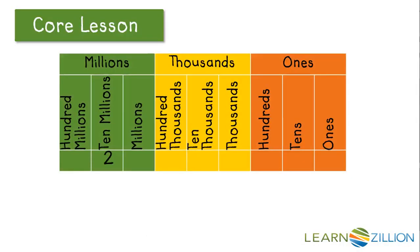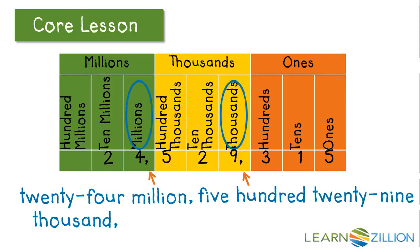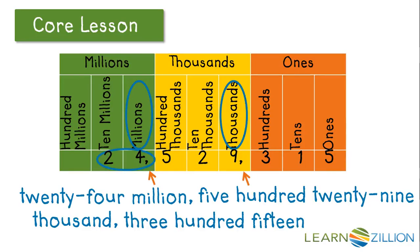Let's look at another number: 24,529,315. Remember, wherever we see a comma, we need to insert the unit name. So we have 24 million. We move to the next period. When we see the number 24, we need to remember to insert a hyphen. With the 29, we would insert a hyphen again between the tens and units. And 15 is written as one word.